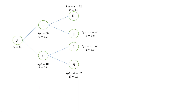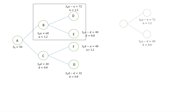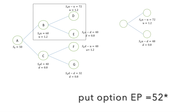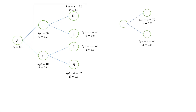The first step is to isolate triangle BDE. We calculate FU and FD values for nodes D and E respectively. Our put option exercise price is $52 — we can sell at $52 or choose not to. At the upside price of $72, we will sell in the market and not exercise the option, so FUU = 0. At the downside price of $48, we will exercise the option and sell at $52, so FUD = 4.